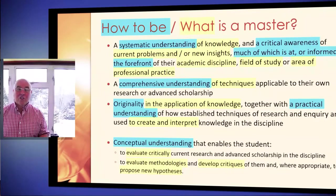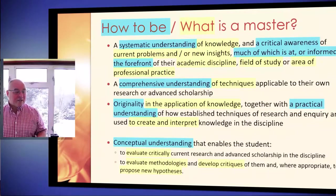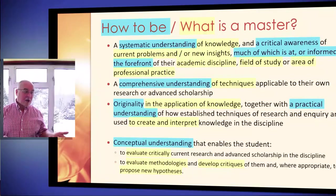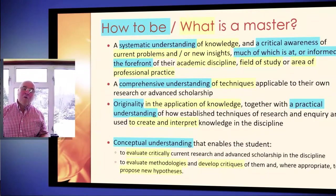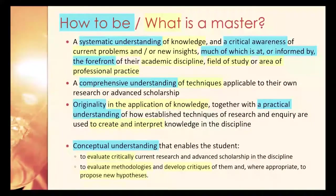So the first one, for example, says that the student is expected to have a systematic understanding. Every word matters — it's not just an understanding of something, but a systematic understanding, and a systematic understanding of what? That's what I've highlighted in yellow: it's of knowledge. Then they're expected to have a critical awareness of what? Of current problems or new insights, much of which is at or informed by the forefront of their academic discipline, their field of practice, or their area of professional practice.